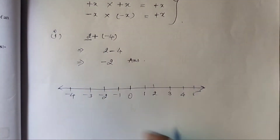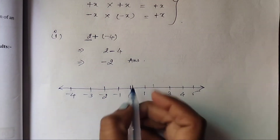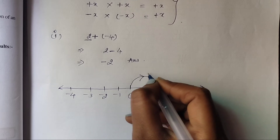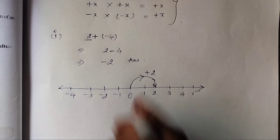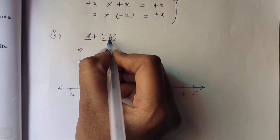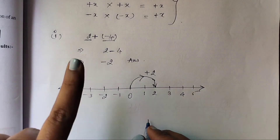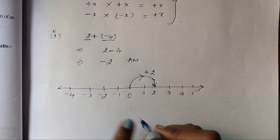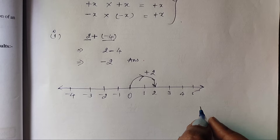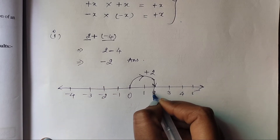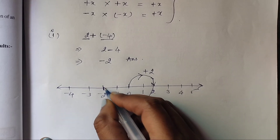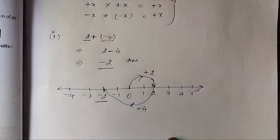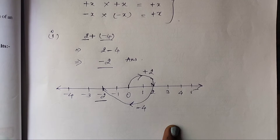Here we have 2 with a positive sign, so from 0 you take 2 steps to the right and land on 2. Now the second step: minus 4, so from 2 you move 4 steps to the left — because left side has negative numbers and right side has positive. Moving 4 steps left from 2: 1, 2, 3, 4 — you arrive at minus 2. So the answer is minus 2.